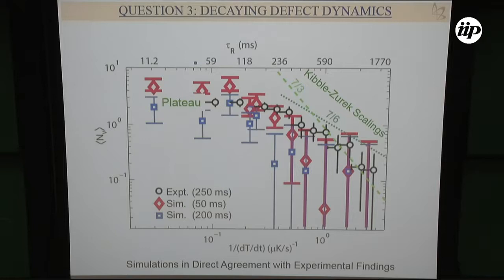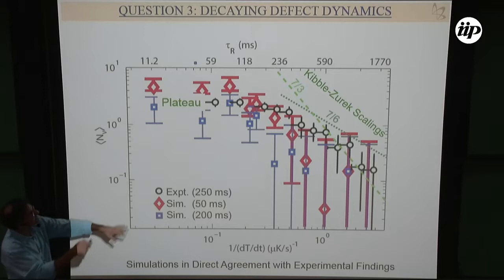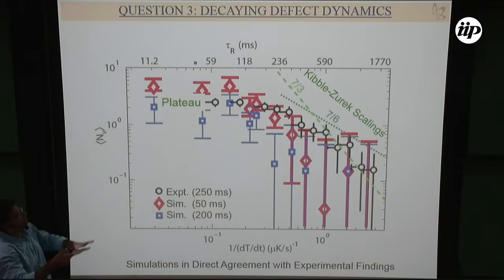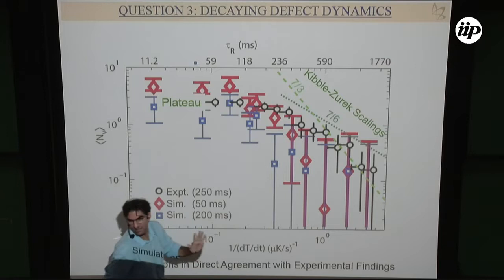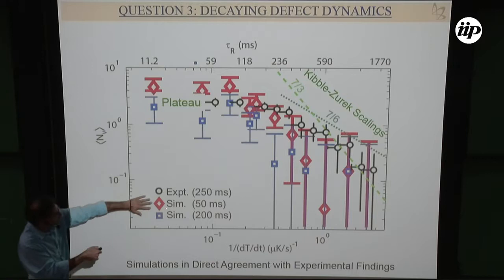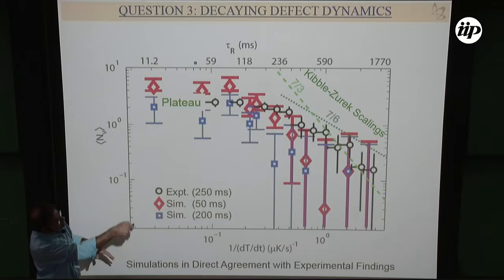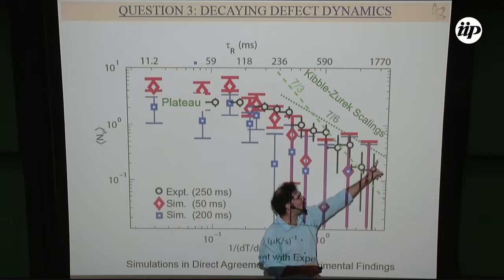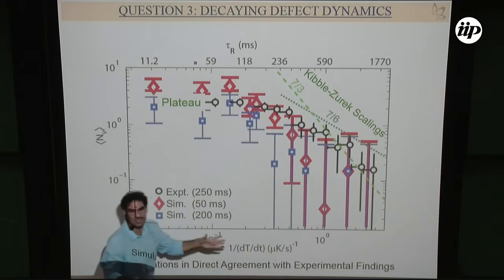Looking at the experimental curve — black points showing defect number as a function of inverse cooling rate — at different times in the evolution, we find a plateau for very fast quenches (not the Kibble-Zurek regime), and then something resembling Kibble-Zurek for slower quenches. The slope in the curve doesn't change much whether simulated at 50 or 200 milliseconds of evolution. The theoretical predictions for a homogeneous system for soliton and vortex would be 7/3 and 7/6 — we're broadly within that range.